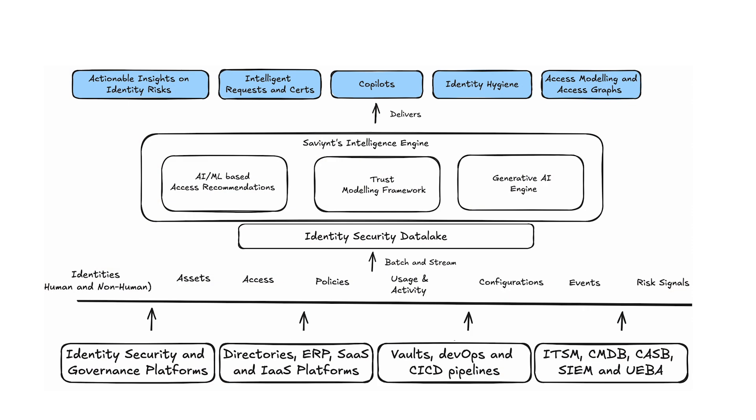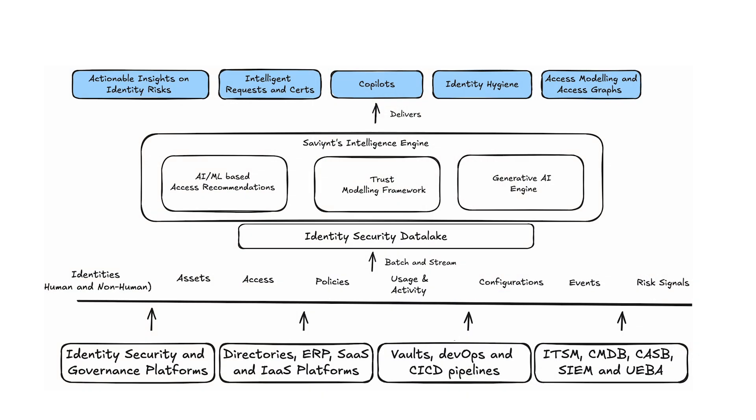Second, as these recommendations flow into your identity governance processes, your requests and search become intelligent. Third, with our large language model integrations we are now delivering co-pilots. That means humans can interact with the identity platform without the know-how of the underlying technology, without understanding the jargon — they simply lay out their business ask and let the system do the heavy lifting, providing contextual help wherever and whenever they need it.